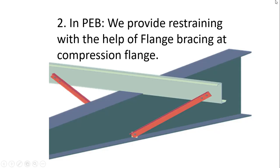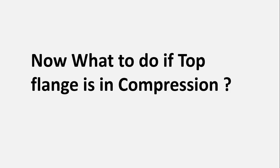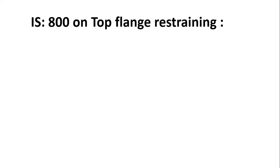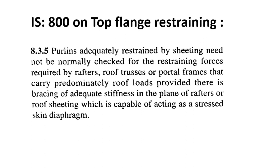In PEB (Pre-Engineered Buildings), we provide restraining with the help of flange bracing at the compression flange. As per IS 800 clause 8.3.5, purlins adequately restrained by sheeting need not normally be checked for the restraining force required by rafters, roof trusses, or portal frames, provided there is bracing of adequate stiffness in the plane of rafters capable of acting as a stressed skin diaphragm. So in PEB, the top flange is restrained by purlins connected to sheeting and need not be checked for restraining force.